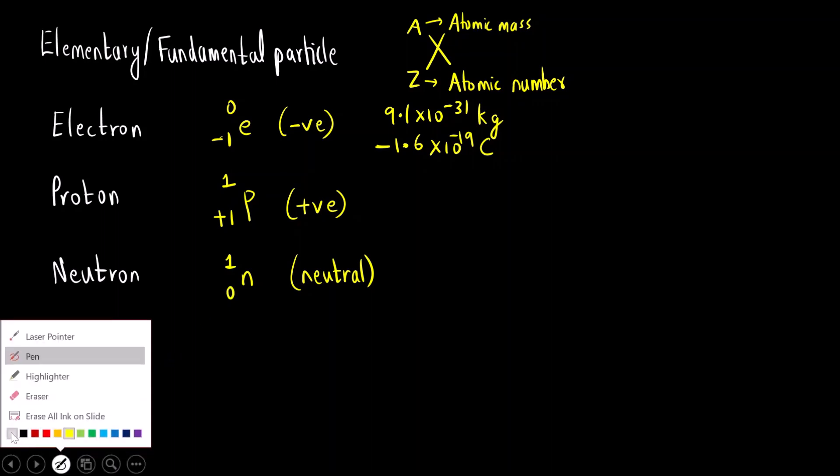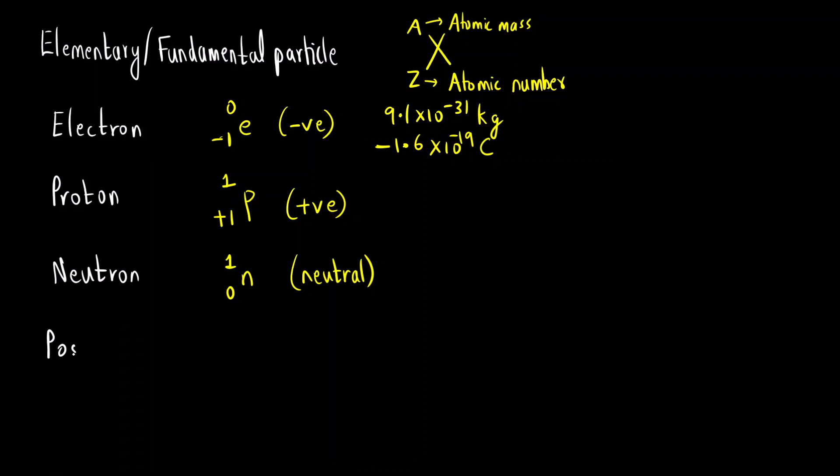And there is another particle that is called positron. It is written as E, small e, just like electron. It also does not have any mass. But what is the charge of a positron? Electron is minus 1, positron is plus 1. It is different from proton. Why? Proton has mass, but positron does not have mass.